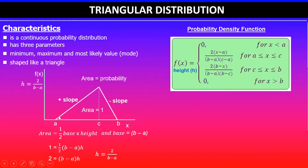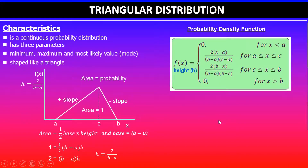Use the first formula when finding the height between a and c, which corresponds to the positive slope. Use the second formula when finding the height between c and b, which is the section with a negative slope. As long as you note which slope section you're in, you'll never go wrong.